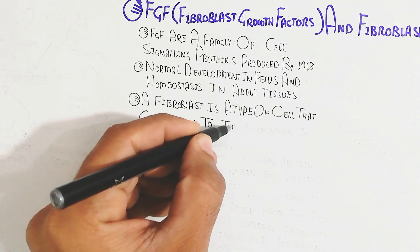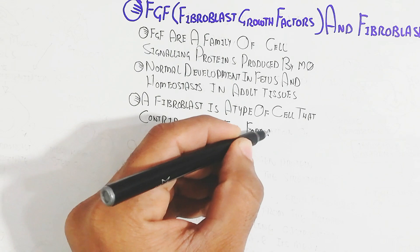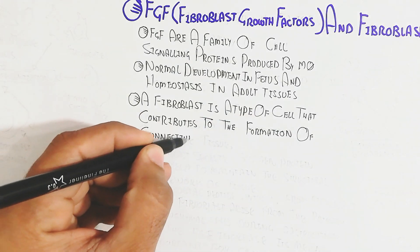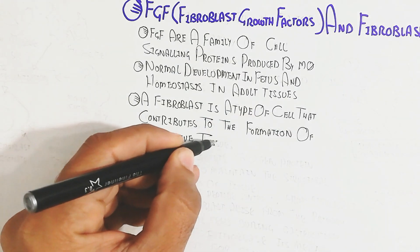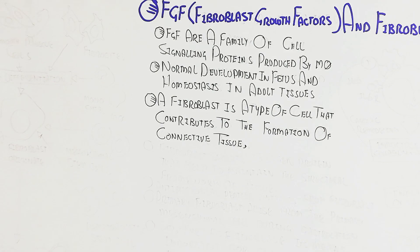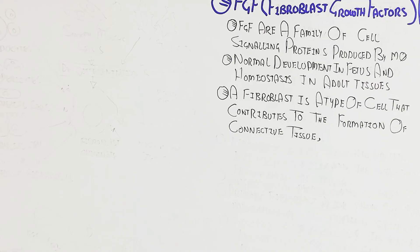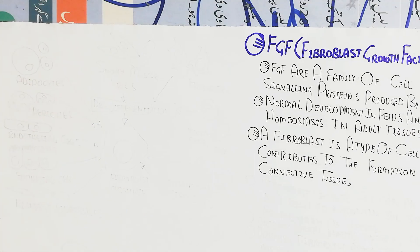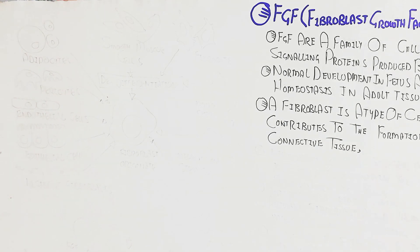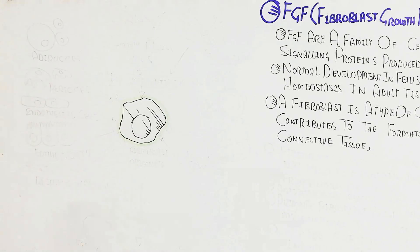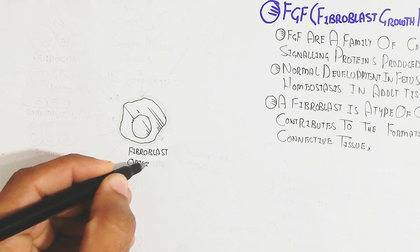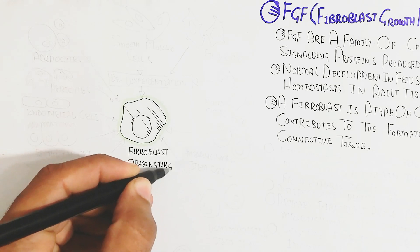A fibroblast is a type of cell that contributes to the formation of connective tissue, such as blood, bones, and other tissue types.